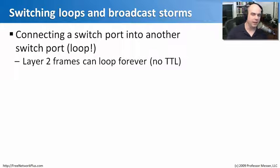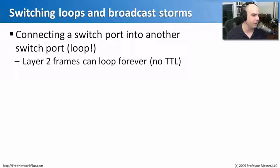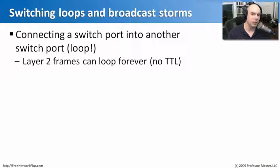Whenever you start working with switches, one of the things you must always be careful about is creating a loop. If you were to take a link coming out of a switch and plug it directly back into the switch on the same physical VLAN, the same VLAN configuration, what you're going to have is a loop. One of the problems with Ethernet at layer 2 when a loop occurs is that there's no way to know it's looping.